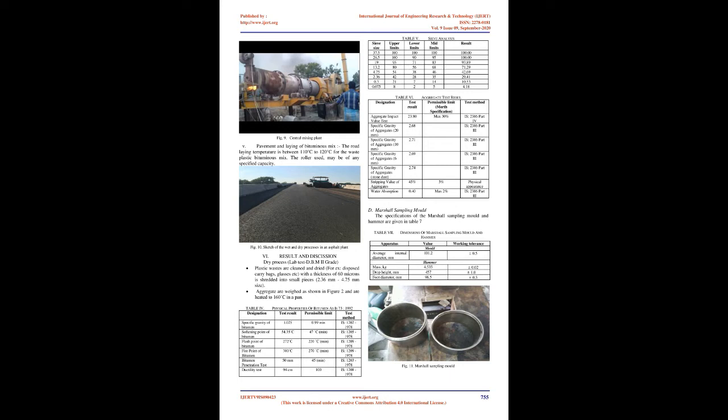Dry Process: In the dry process, the processed waste plastic is shredded and added to the hot aggregate. The Indian Road Congress and National Rural Roads Development Agency indicate that the shredded waste plastic size should preferably be 2 to 3 millimeters for better spread and coating on the aggregate. Dust and other impurities should not exceed 1%. The shredded waste plastic is then added to aggregates heated to 170°C. The plastic softens and melts to form a coating around the aggregates (Sahu and Singh, 2016). Bitumen is also heated to 160°C, then the plastic-coated aggregates are mixed with bitumen and used for road construction.